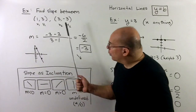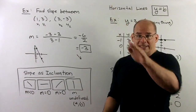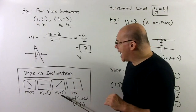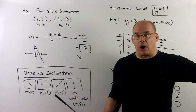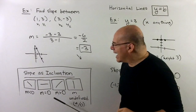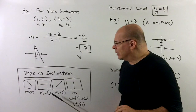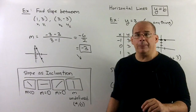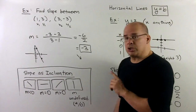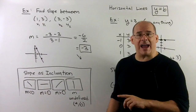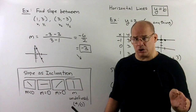To summarize: if slope is negative, the line goes down and to the right; if positive, up and to the right. If slope equals exactly zero, you have a horizontal line. If slope is undefined — meaning you're dividing by zero — you have a vertical line.